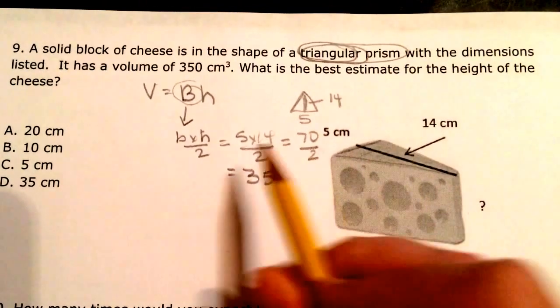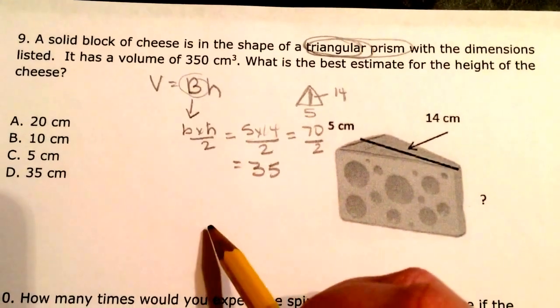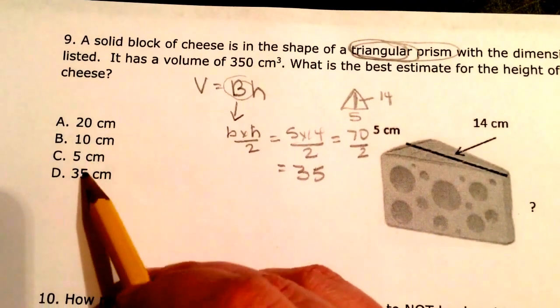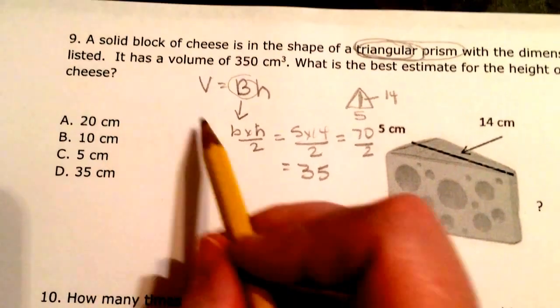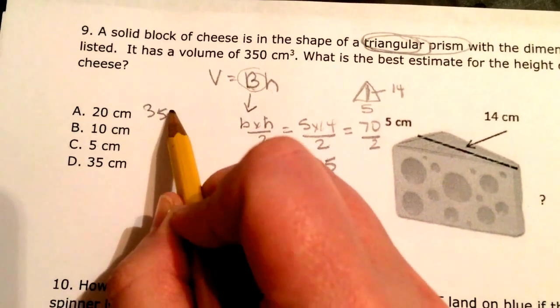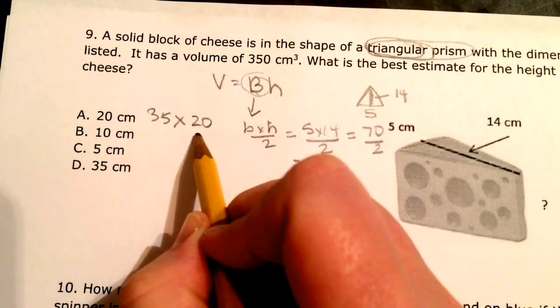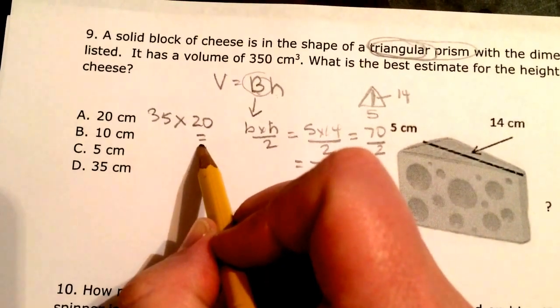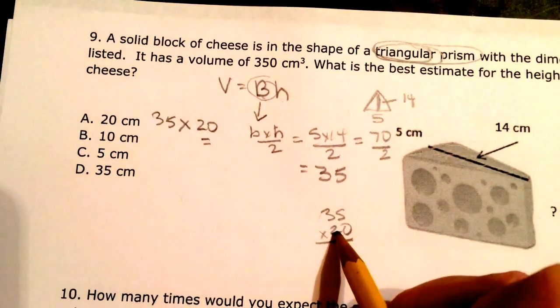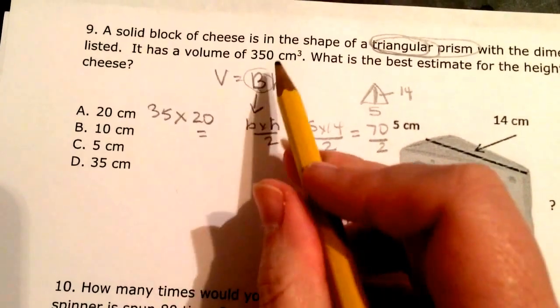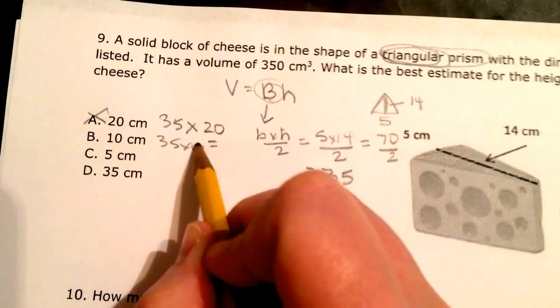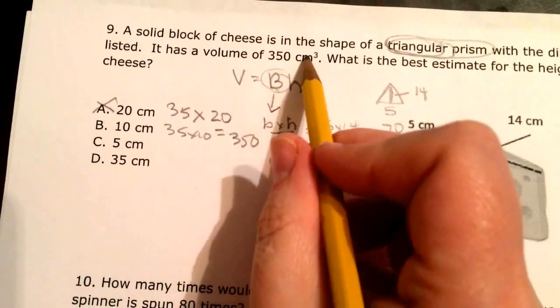Alright, so what could my height be to give me a volume of 350? I'm not totally sure. So let's try this. Let's look at each of my answer choices and see if I can figure it out. So my area of my base is 35. So 35 times 20 is what? Well, I know 35 times 2 is 70. And I can add that to 700. Well, that's not 350. So that's not it. Let's see. 35 times 10. Oh, that's 350. That's what I'm looking for.